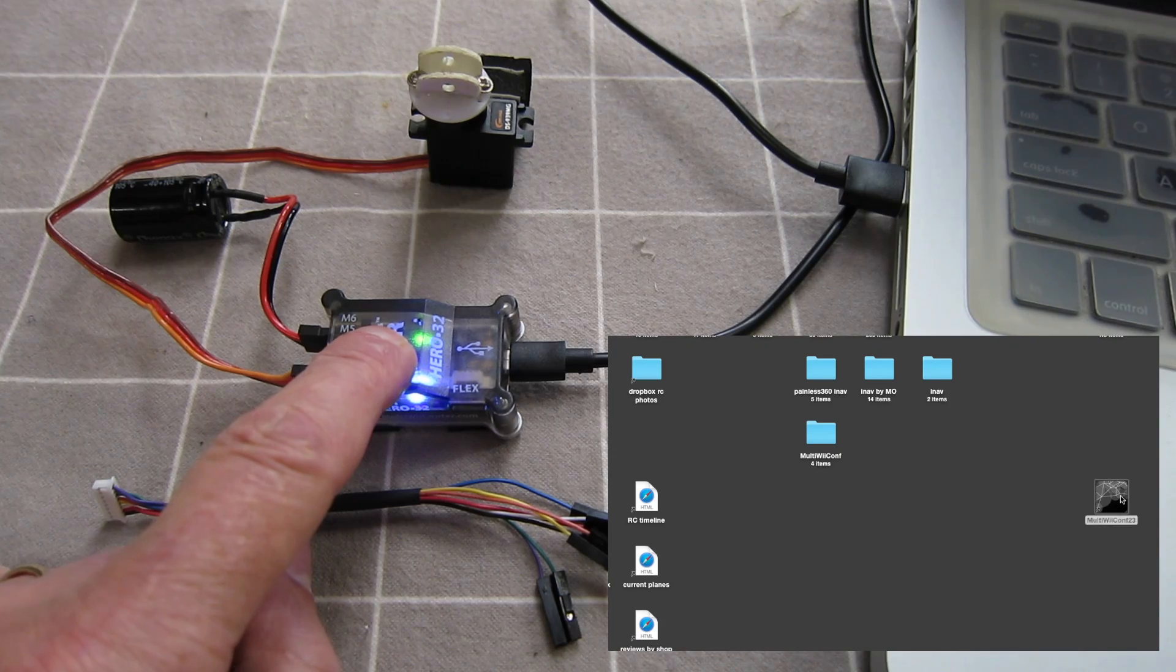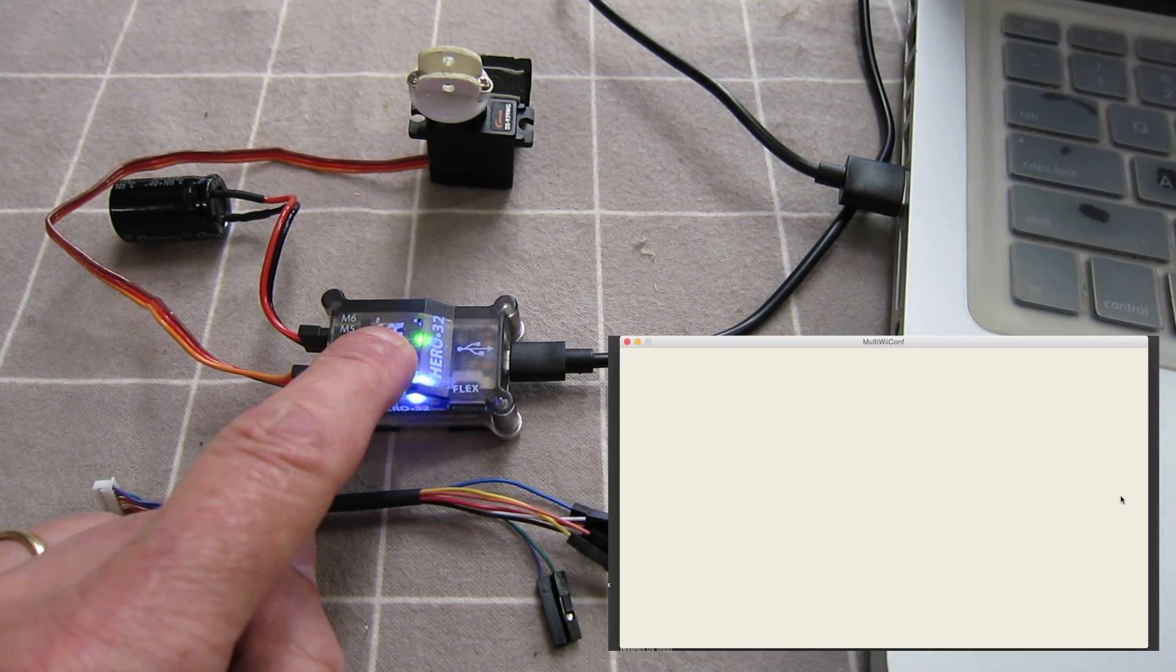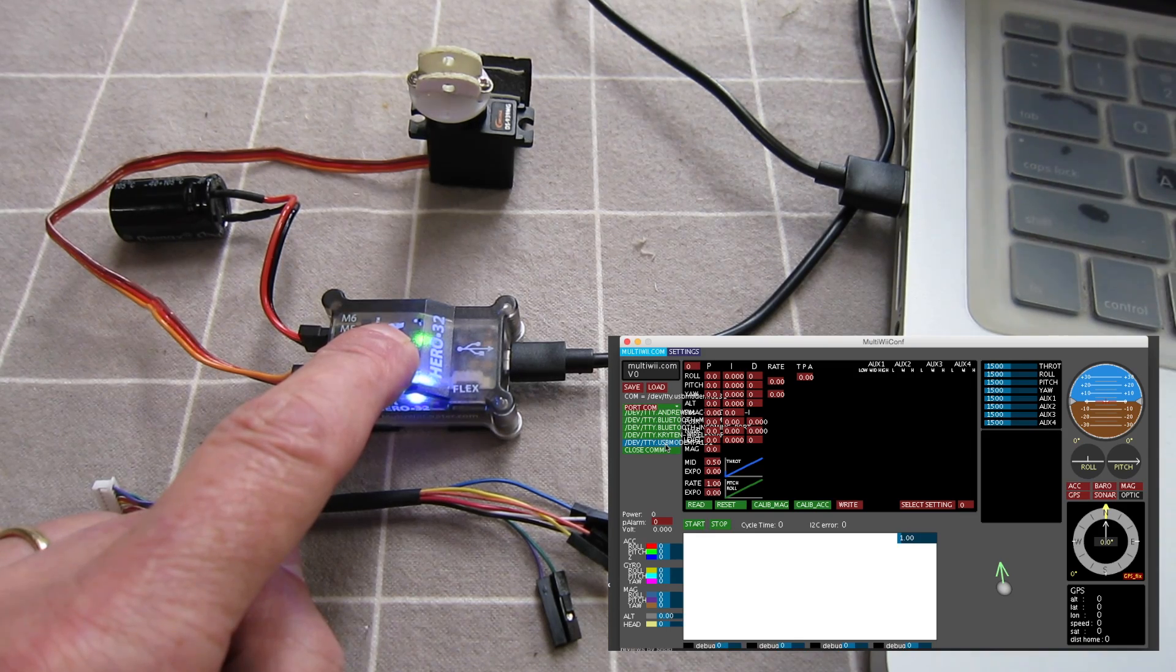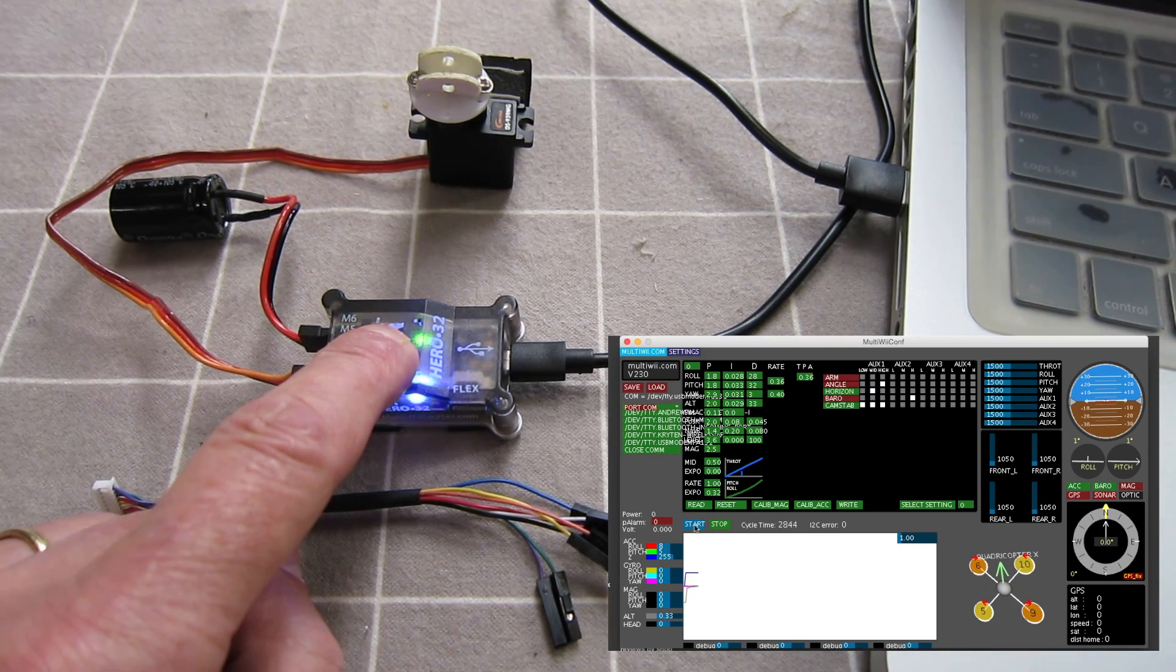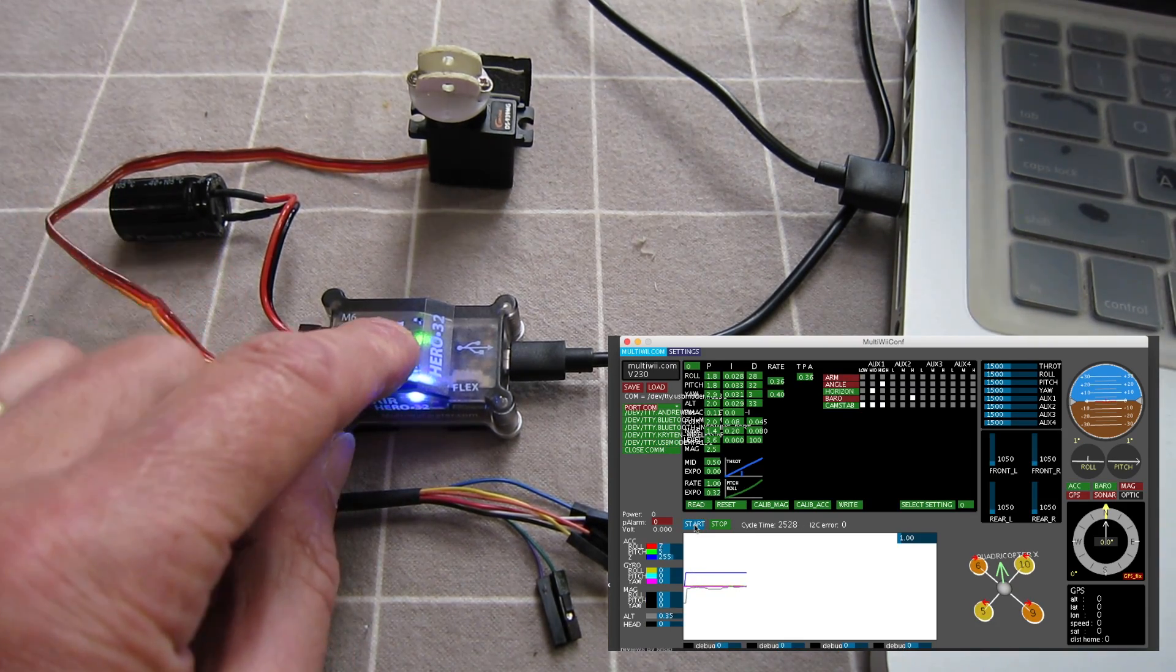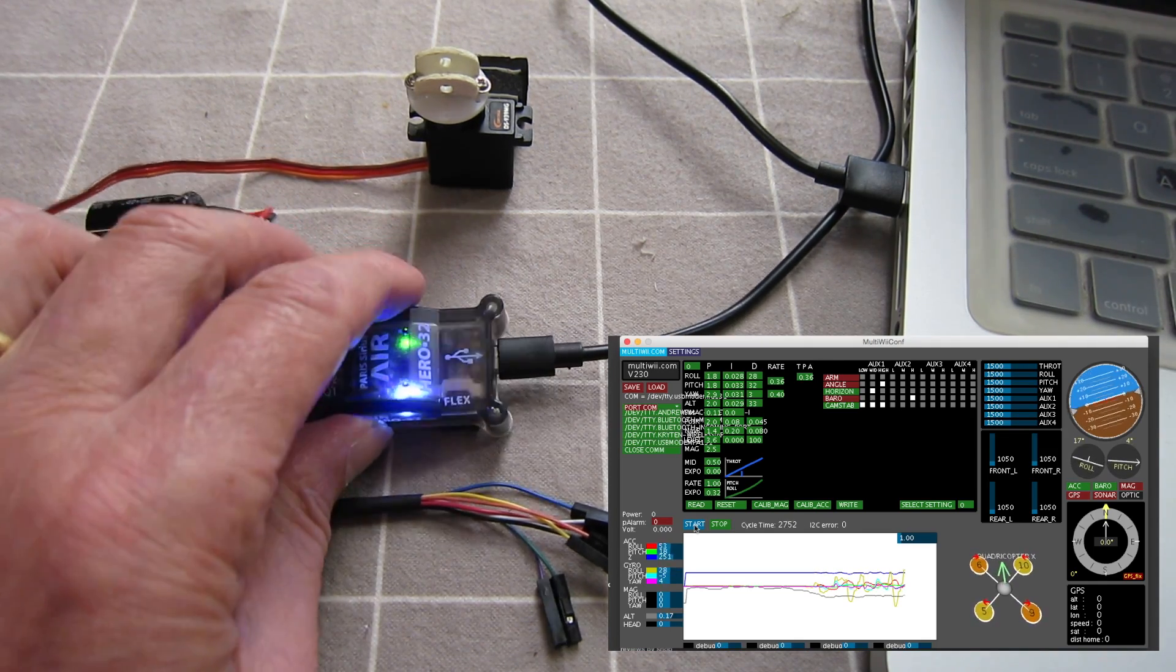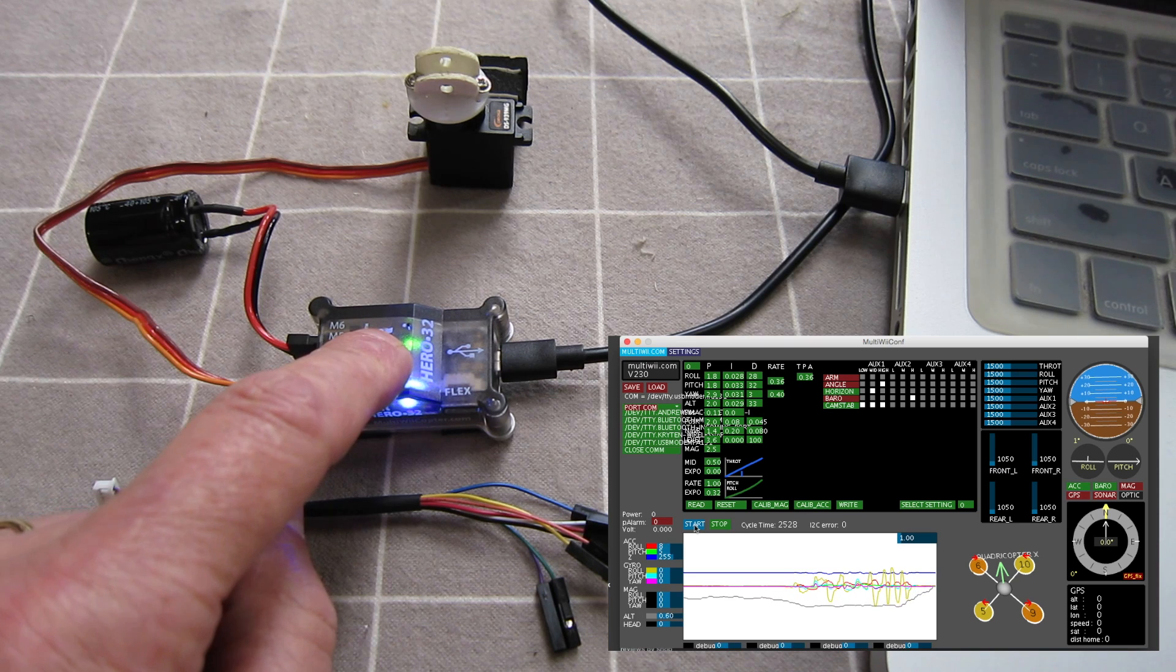Open up the Multiweecopter configuration app and there we go. Select the right COM port and it connects, click start, there we go. So that's just like an old fashioned version of iNav or CleanFlight I guess.